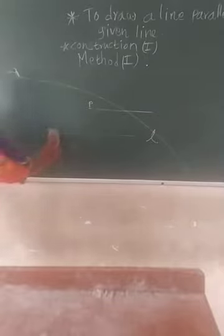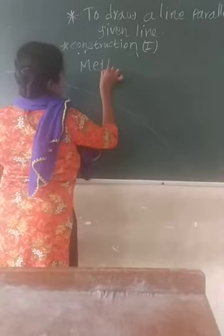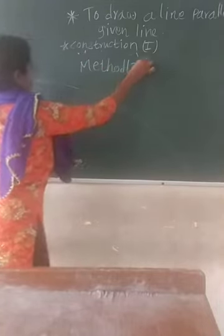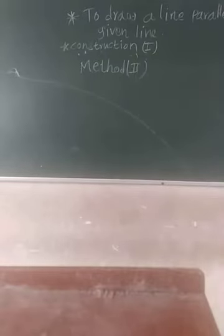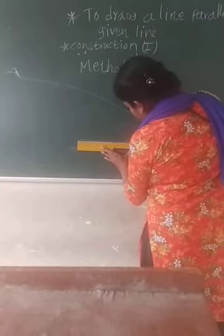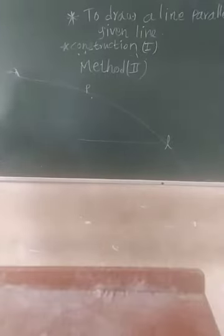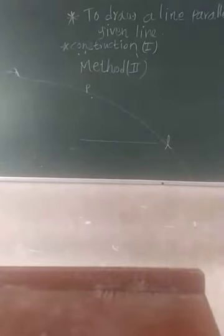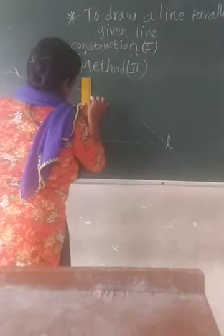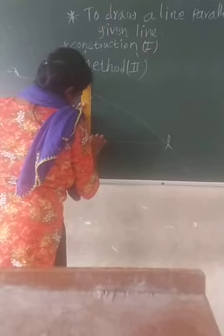Now we have method second. In method second, one line L is given — that is our given line. For that line we have to draw one parallel line. So take a point P outside of this line.